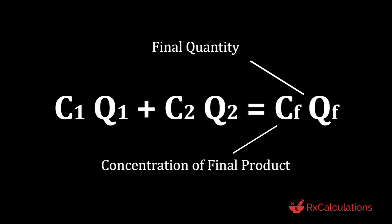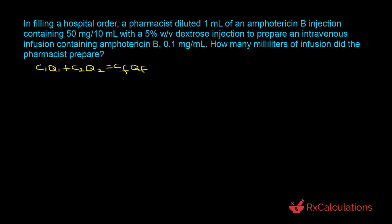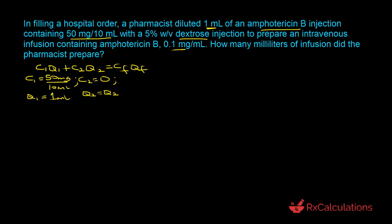Since we're mixing two components, we use the equation: C1·Q1 + C2·Q2 = Cf·Qf. We designate amphotericin B as component 1 and dextrose as component 2. So: C1 = 50 mg/10 mL, Q1 = 1 mL, C2 = 0 (no amphotericin B in dextrose), Q2 is unknown, Cf = 0.1 mg/mL, and Qf = Q1 + Q2 is what we're looking for.